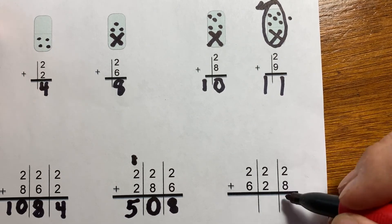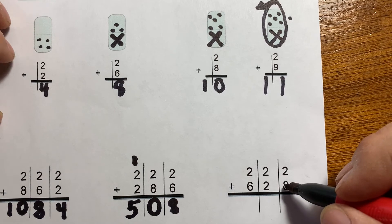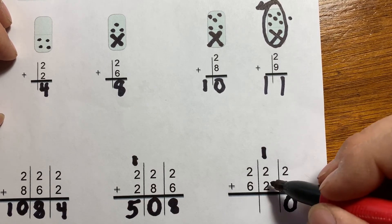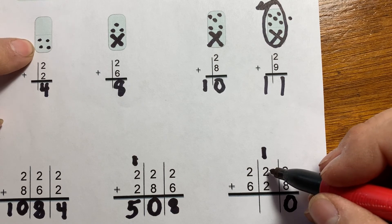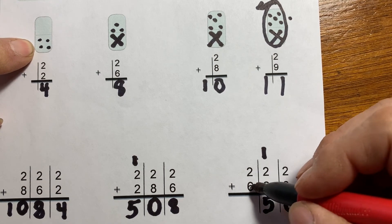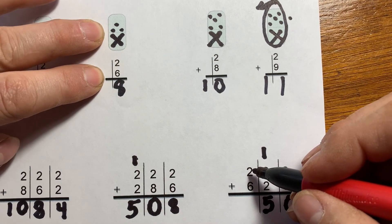Last problem. Let's start out with the regrouping. Eight plus two is ten. Two plus two, four. And one more, five. Six plus two is eight.